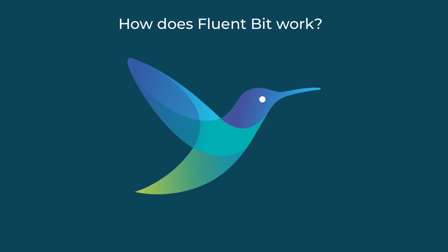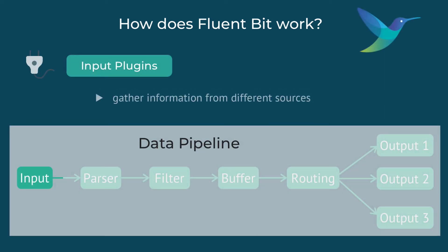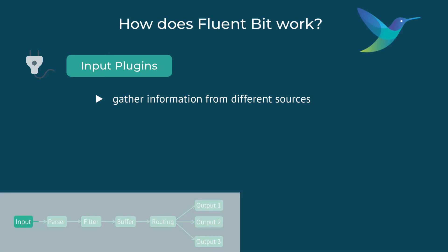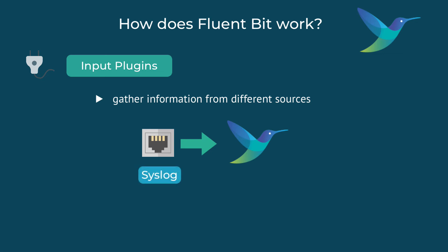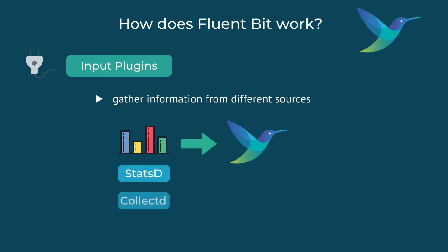So how does FluentBit work? FluentBit uses input plugins to read the logs from the data sources. For example, if you need to read log files, you need a plugin to read from log files. If you're going to receive messages over TCP, you need an input plugin that listens for messages over TCP. FluentBit supports many different input sources. FluentBit also has input plugins for metrics data collection — for example, it supports StatsD and collectd input plugins, but also supports collecting metrics on the host system's CPU, memory, and disk.